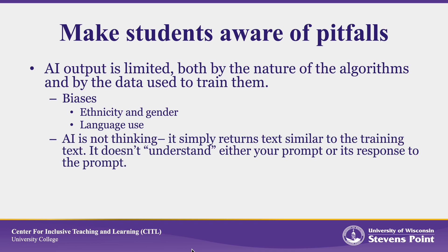Remember that AI is not thinking — it simply returns text similar to the training text. It doesn't understand either your prompt or its response to the prompt. Because of this, the output you receive may not seem to really address the prompt you provided. AI can mimic human conversations very well, and because our brains are wired toward anthropomorphism, it's sometimes easy to lose sight of the fact that AI isn't following quite the same rules that humans would.